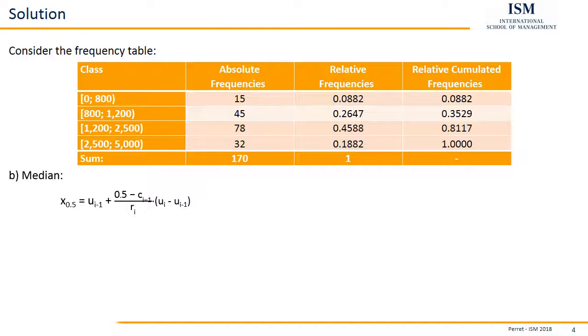If we take a look at our table, we see here this is the first time that the relative cumulative frequency becomes larger than 0.5. So here, this class from 1,200 to 2,500, that's our median class.